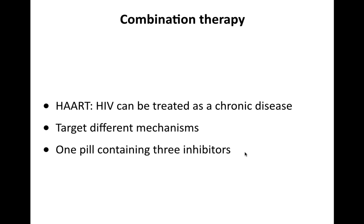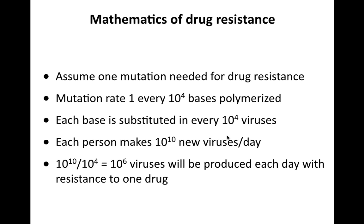The only way to treat HIV with antiviral drugs is combination therapy — called HAART, or highly active antiretroviral therapy. We can now treat HIV as a chronic disease with multiple drugs, each targeting a different mechanism. We even have a single pill containing three inhibitors that has been approved. To understand why combination therapy works, consider the mathematics of drug resistance: if the mutation rate is one mutation per 10,000 bases polymerized, then in a pool of 10,000 viruses, every base position is mutated once.